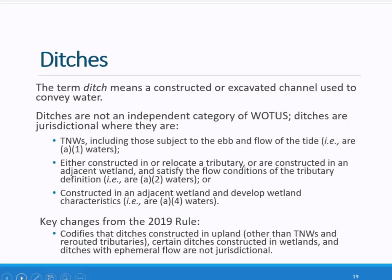After considering public comments on the proposed rule, the agencies are not finalizing a separate category of jurisdictional ditches. Rather, ditches are jurisdictional where they are traditional navigable waters, are either constructed in or relocate a tributary, are constructed in an adjacent wetland and satisfy the flow conditions of the tributary definition, or are constructed in an adjacent wetland and develop wetland characteristics. For ditches constructed in an adjacent wetland, if a ditch then continues on through upland to flow into a jurisdictional water, that upland portion will still be jurisdictional so long as it has either intermittent or perennial surface water flow in a typical year.